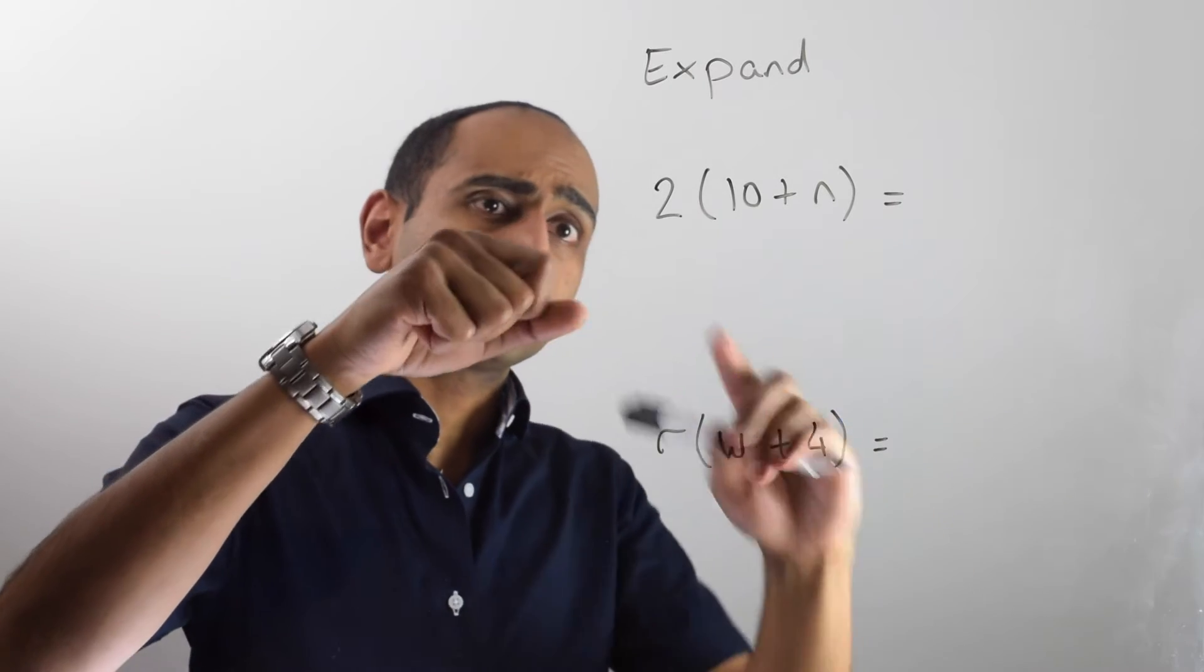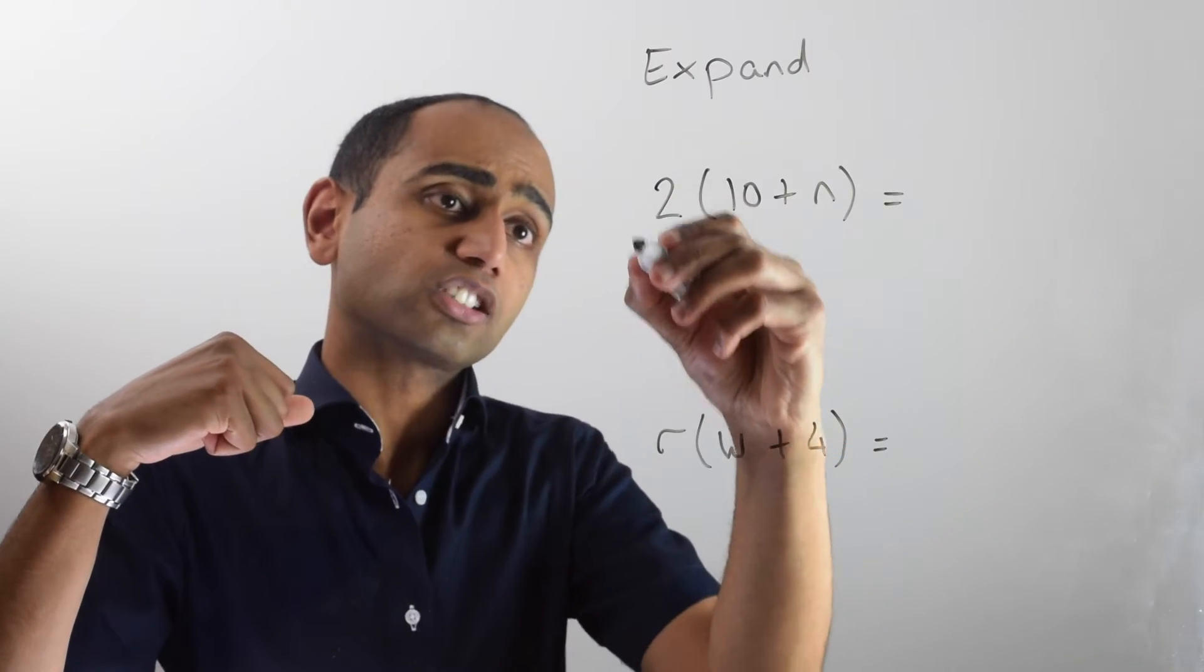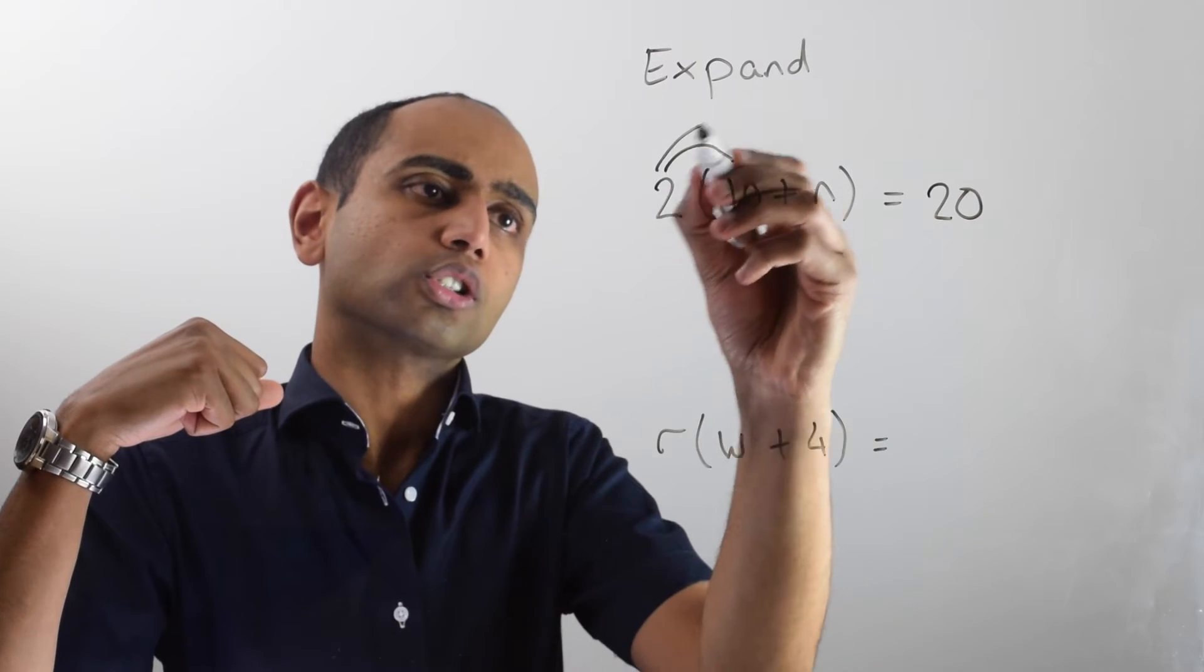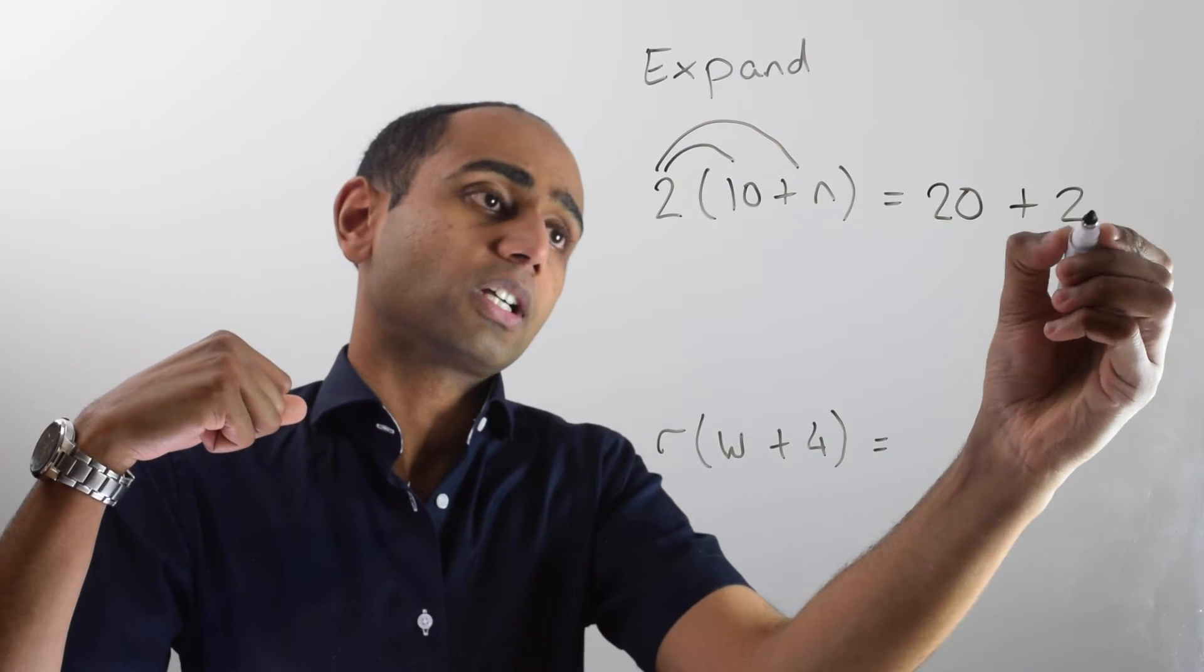In this example I've got two lots of (10 + n). So that's 2 times 10, which is 20. That's this bit there, plus two lots of n, which is 2n.